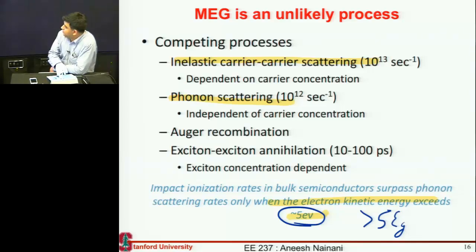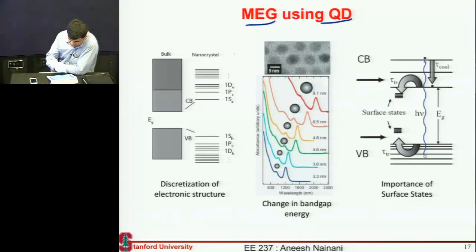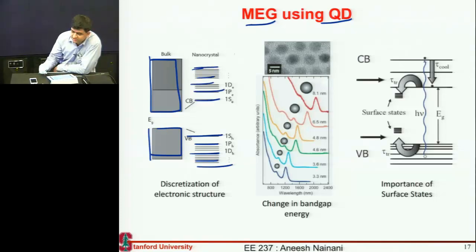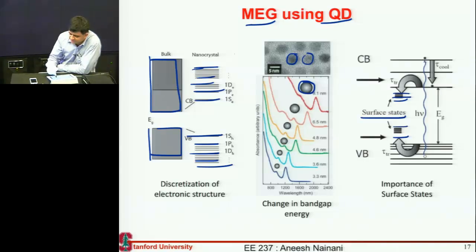Researchers have moved to using quantum dots to realize multiple exciton generation. The reason is straightforward from the band structure: instead of a continuous band with just two discrete states, when you make a quantum dot you have multiple states available inside your device. Quantum dots also rely on surface states produced at their surfaces, where you don't have perfect bond termination, giving you additional states.